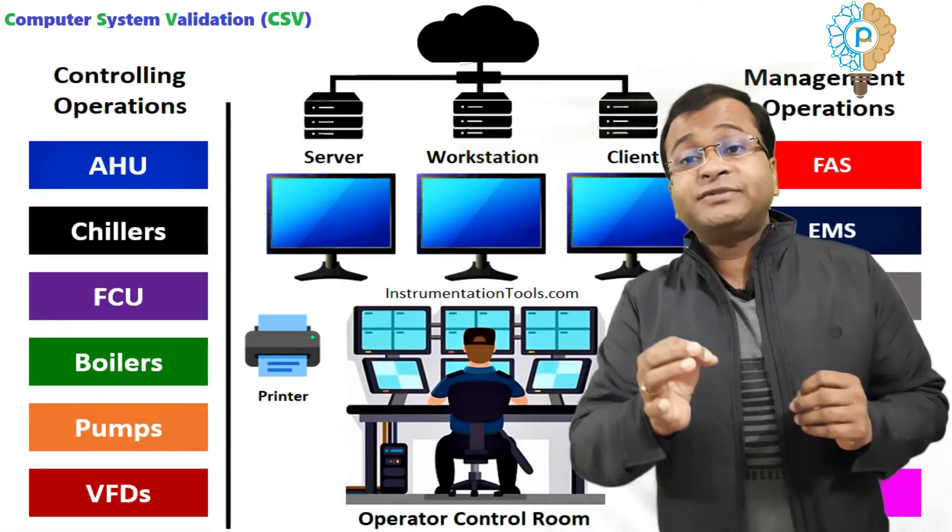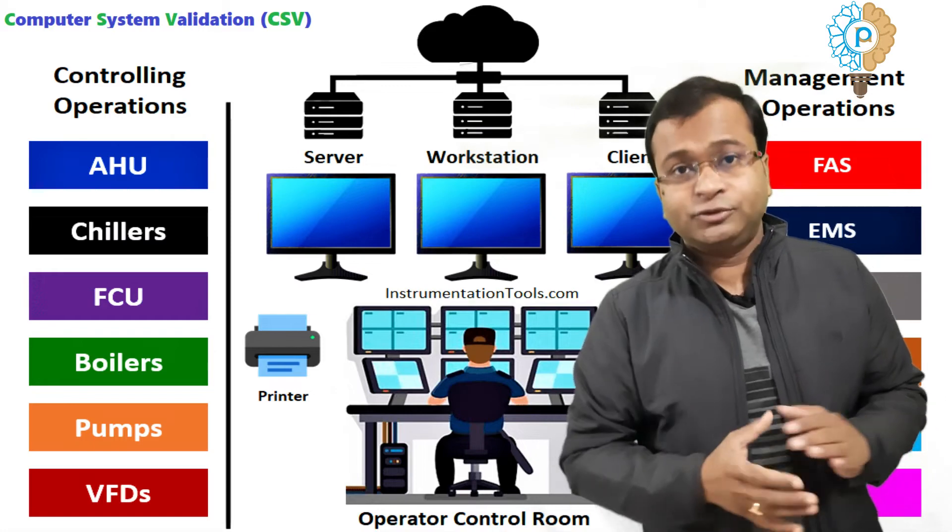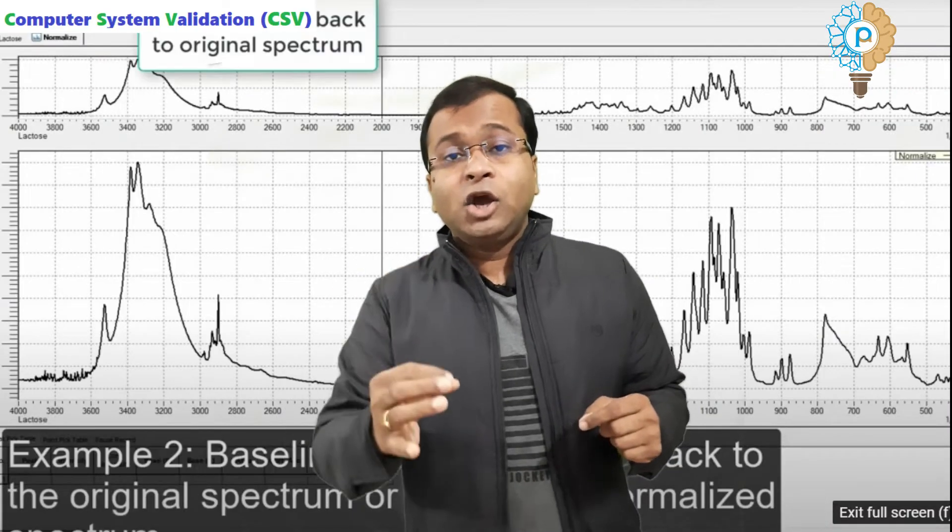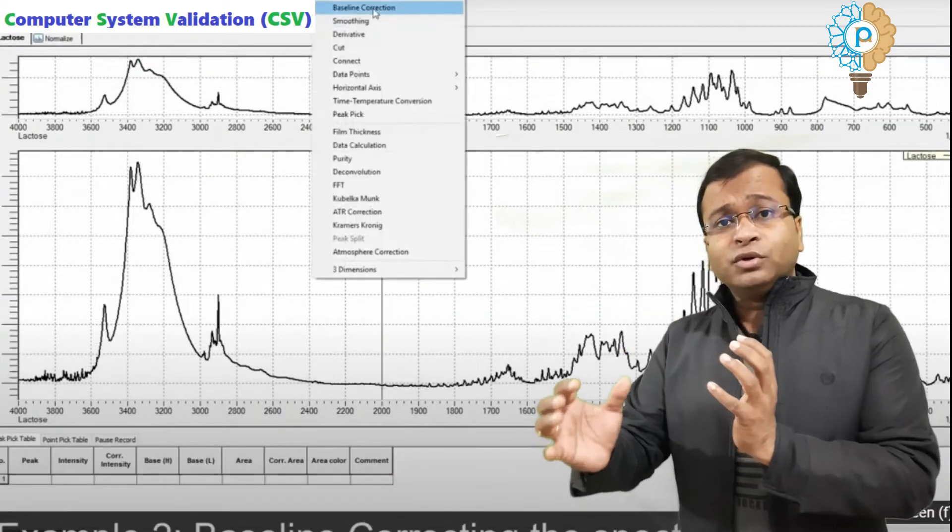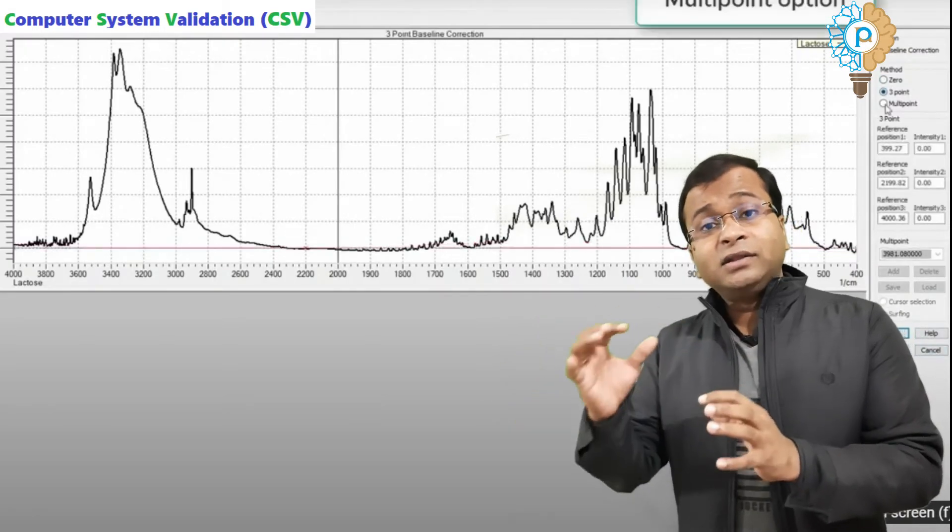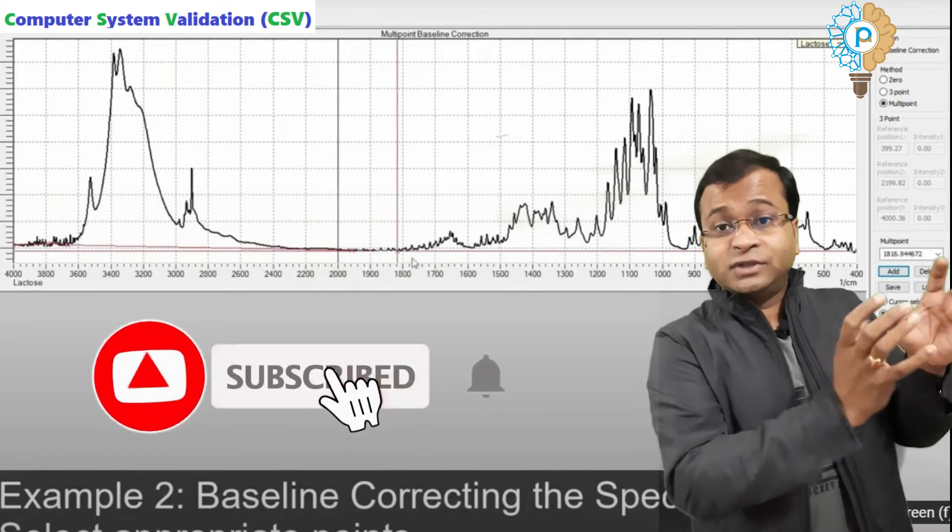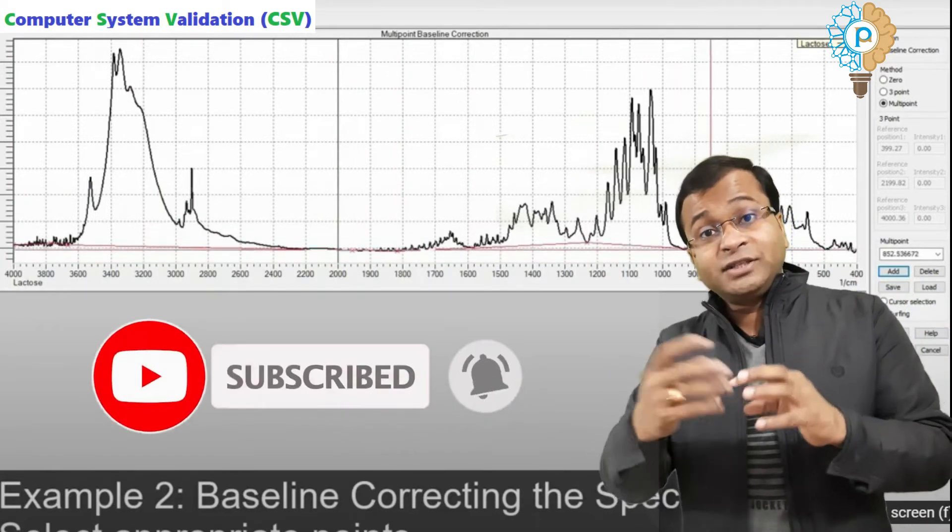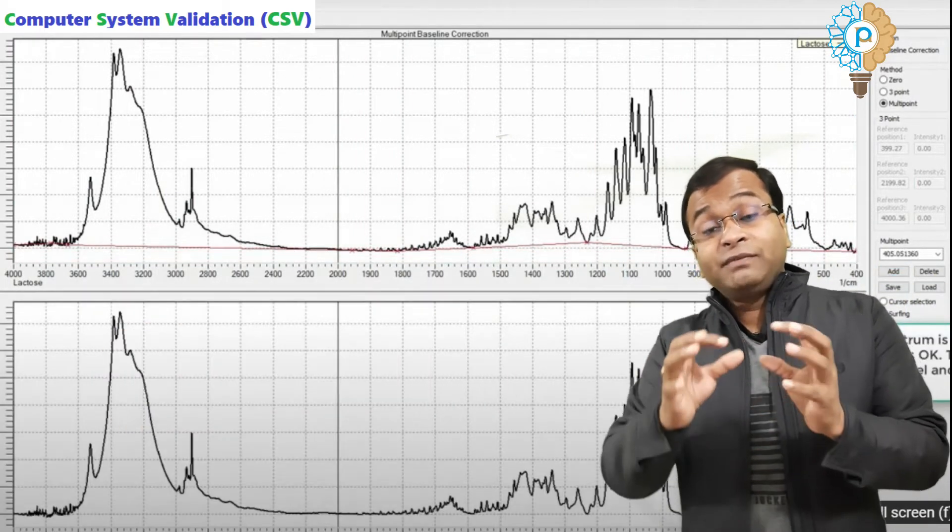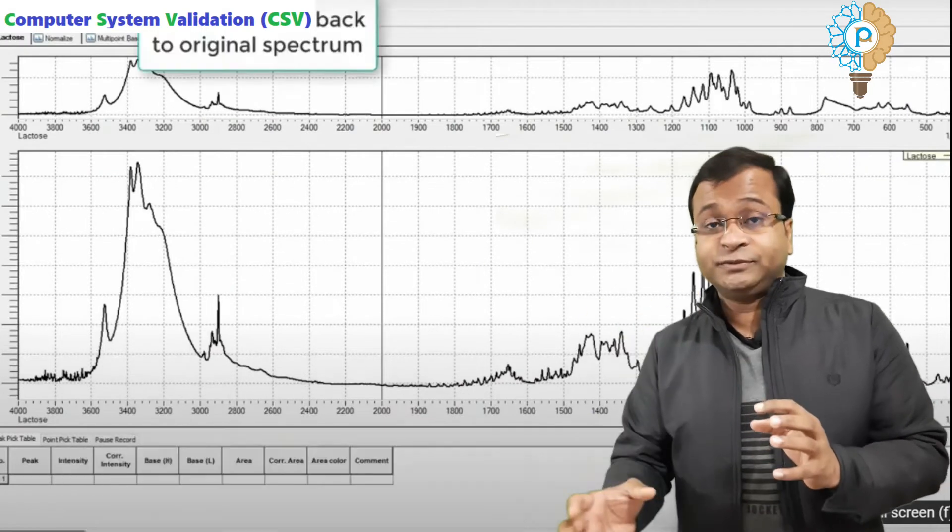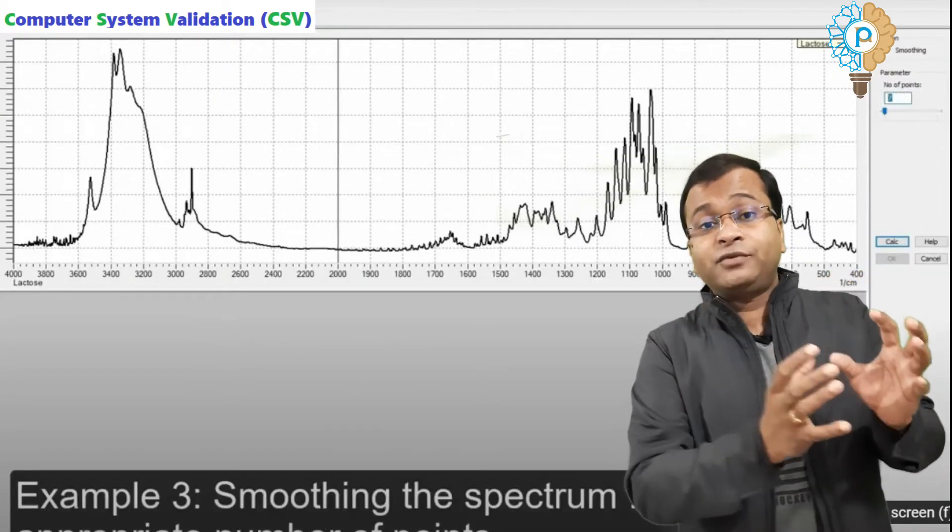In Category 3E, you can view the reading, take the printout from the system, store the data in the server, see the recipe and save the recipe, as well as process the data. Examples include lab software like CDS software or standalone HPLC.